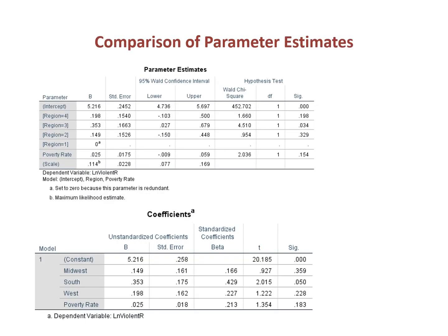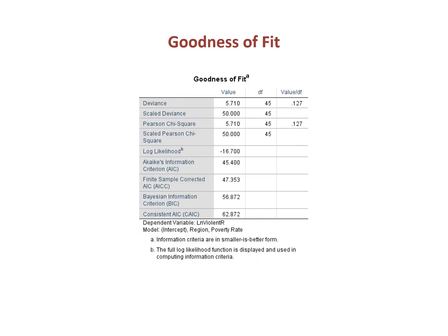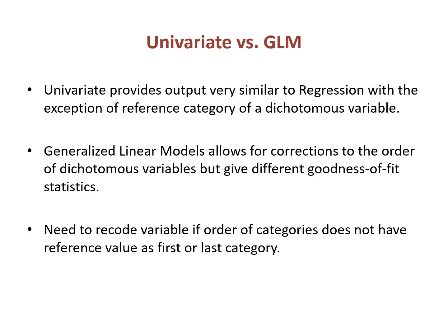The parameter estimates from this model are in the top table shown here, compared to the output from the regression procedure shown at the bottom. Note how the block of dummy variables for region now has the same reference category, and thus gets the same coefficients in both versions of the model. One of the drawbacks of this procedure is the goodness of fit table — notice that the statistics we normally use, the R and R-squared, are not present. Univariate provides output very similar to regression with the exception of the reference category for a dichotomous variable. Generalized linear models allow for corrections to the order of dichotomous variables but give different goodness of fit statistics.